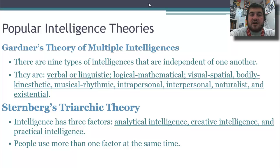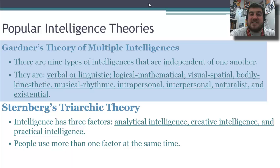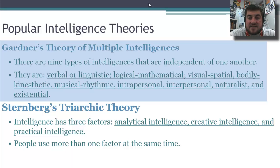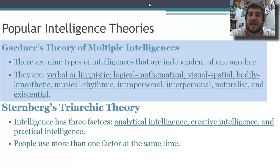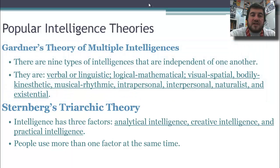Gardner first started out with seven and then expanded to nine types of intelligences that are independent of one another. They are verbal or linguistic, logical/mathematical, visual-spatial, bodily-kinesthetic, musical or rhythmic, intrapersonal, interpersonal, naturalist, and existential. These all relate to how you basically relate with the world and the people in it — nine types of intelligences according to Gardner's theory.